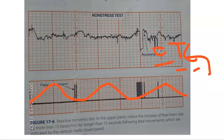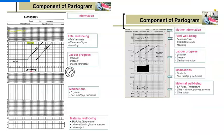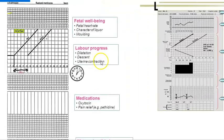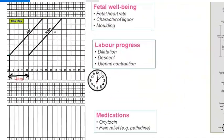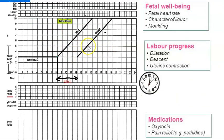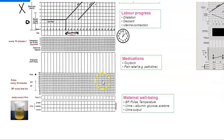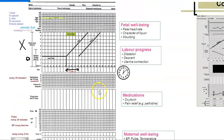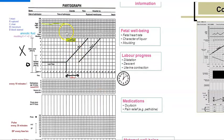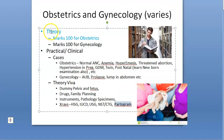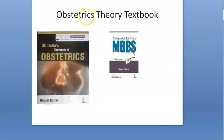When the NST is recorded along with uterine contractions during labor, it is called a CTG - cardiotocography. Cardio refers to the fetal heart, and toco refers to the mother's uterus. The partogram is for labor progress - it has an alert line and an action line. Before she reaches the action line, you should send her to a hospital that can manage. Everything about the mother and baby - medicines, BP, pulse, contractions - will be monitored on the partogram.